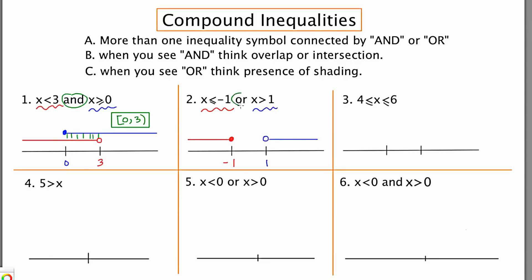Because we're using the connector OR, I'm looking for the presence of any shading. There's shading to the left where it's red. There's shading to the right where it's blue, but there's no shading right in the middle. So it's going to take two sets of interval notation to get all the solutions that we need: negative infinity to negative 1, union 1 to infinity.